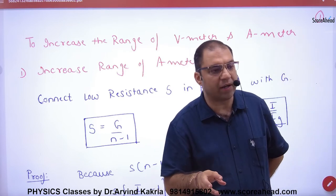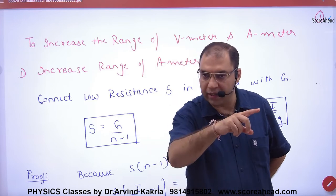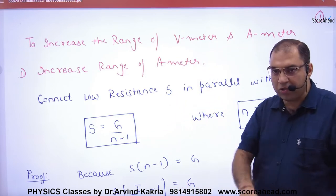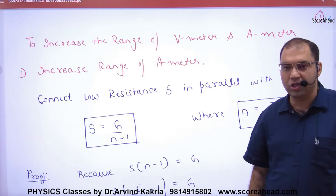So what will you do? How much range will you do? I. So from IG to I, you put shunt and use this formula of shunt: G/(N-1).